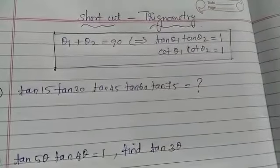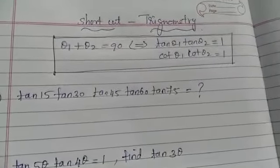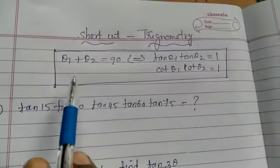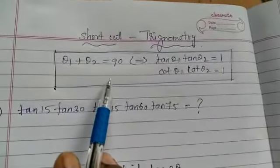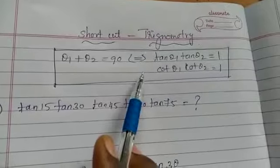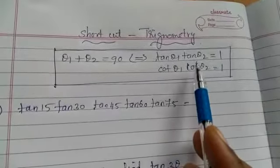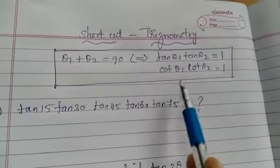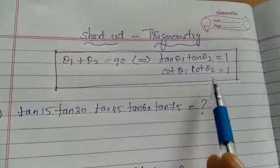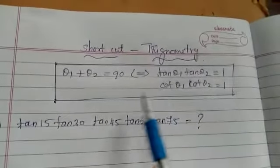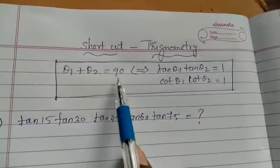Good morning to everyone. Now I teach the shortcut in trigonometry. The shortcut is: theta 1 plus theta 2 equal to 90 degree if and only if tan theta 1 into tan theta 2 equal to 1, and also cot theta 1 into cot theta 2 equal to 1. So if you satisfy theta 1 plus theta 2 equals 90 degree, then the answer of tan theta 1 into tan theta 2 equals 1.